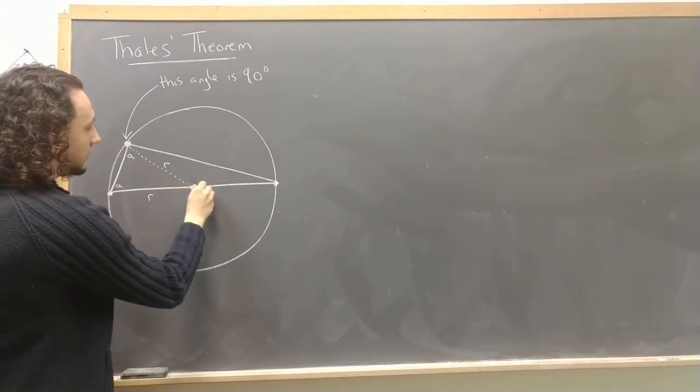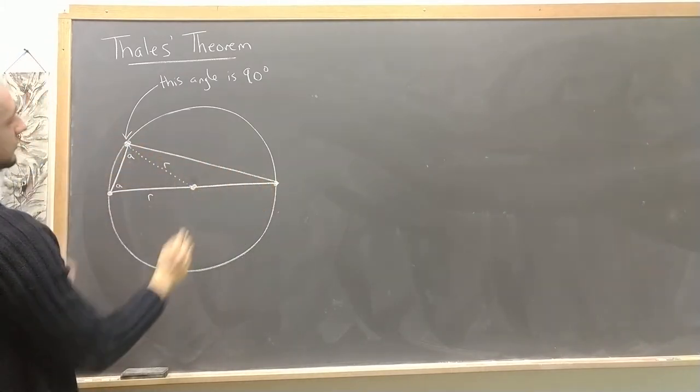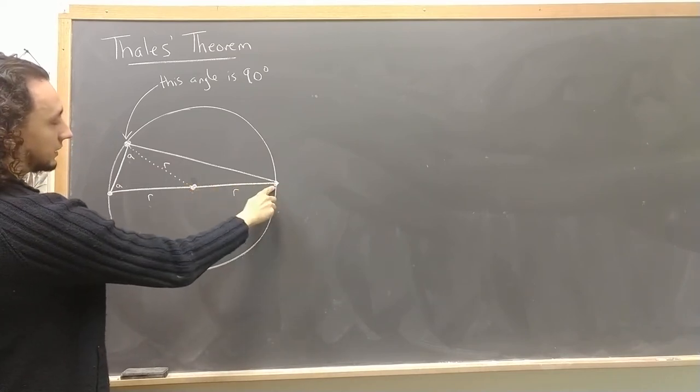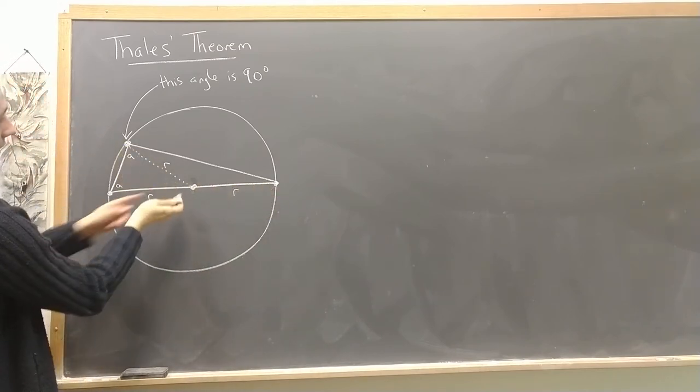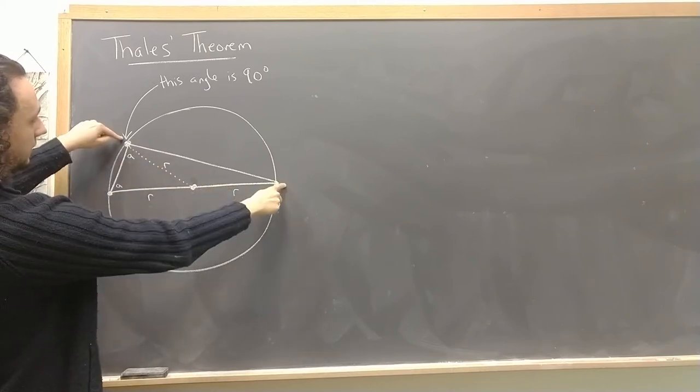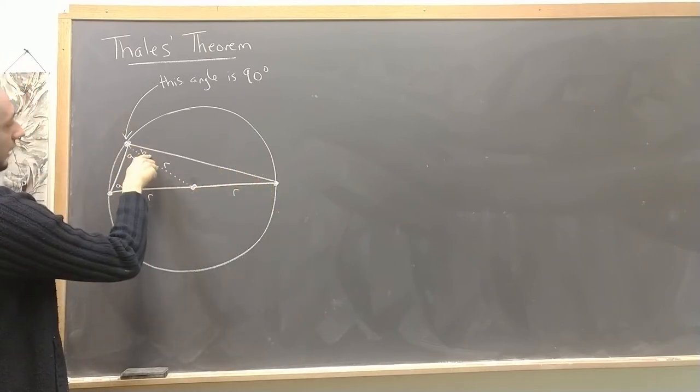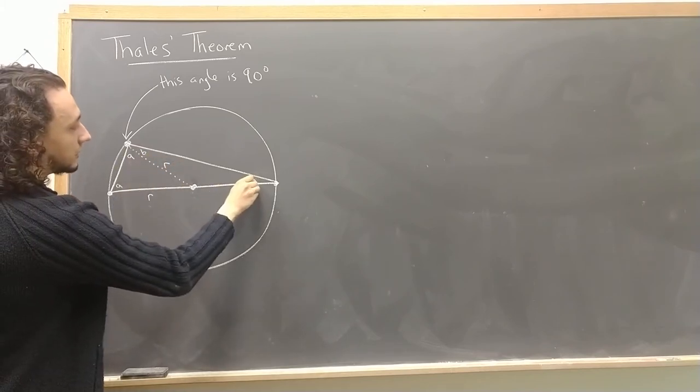By the same token, this wider, flatter triangle we have here is an isosceles triangle because this is a distance r and this is a distance r since it goes from the center of the circle up to the edge. So this is an isosceles triangle. So this angle here, B, is equal to this angle here, B.